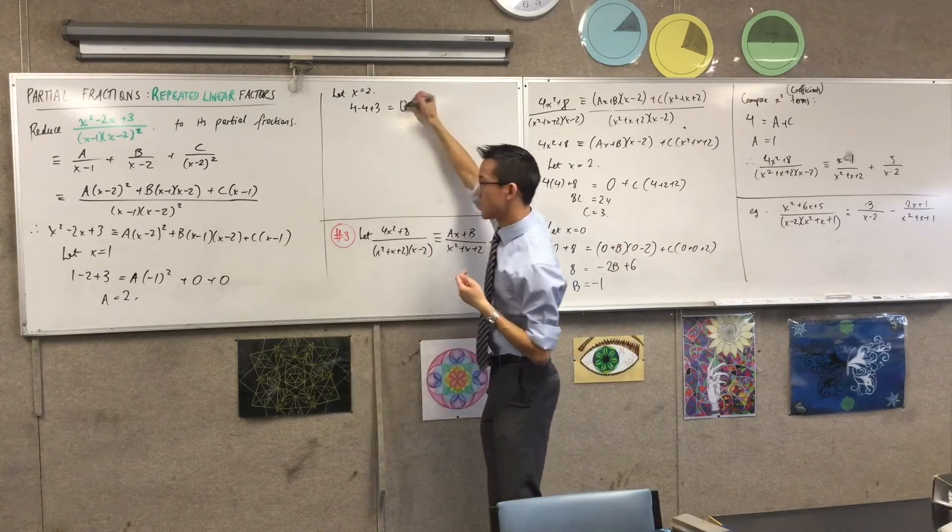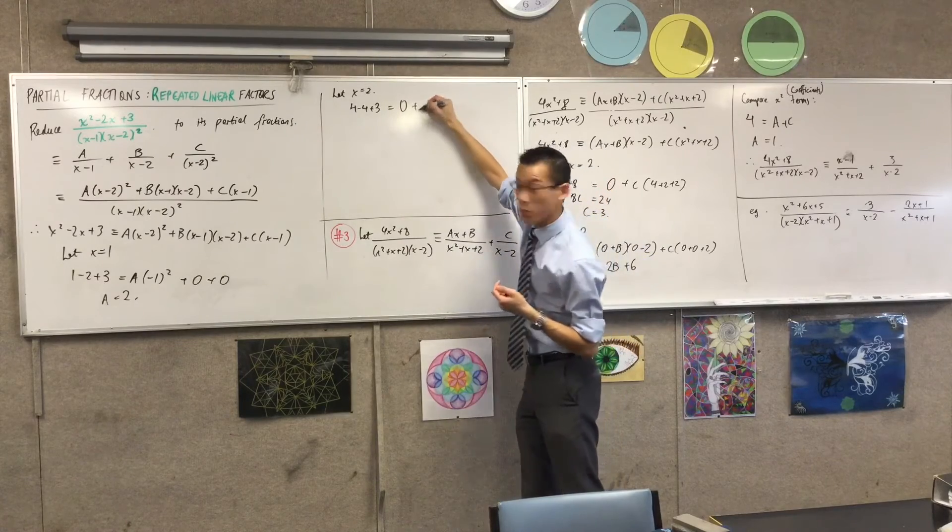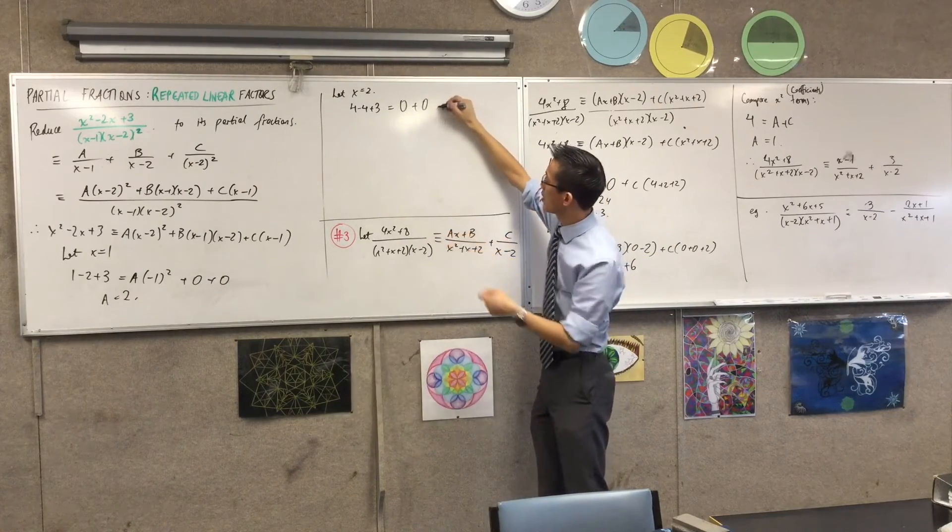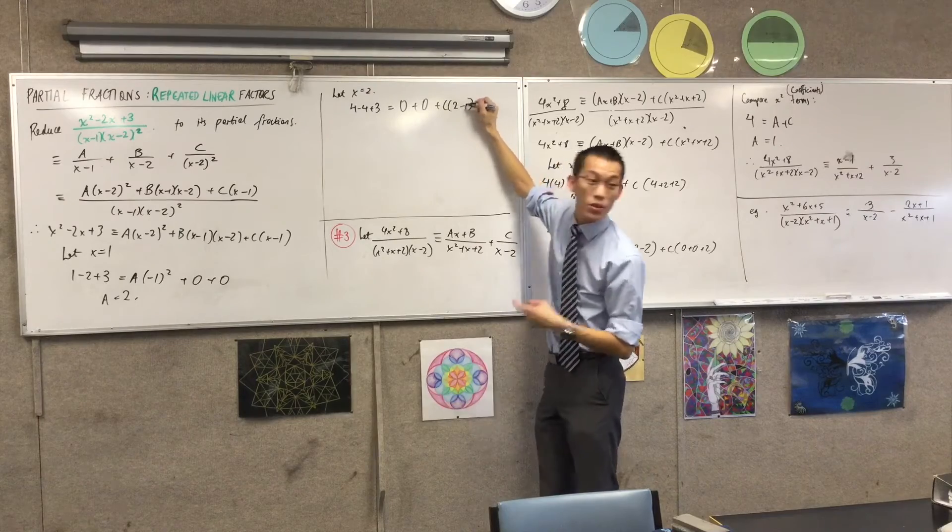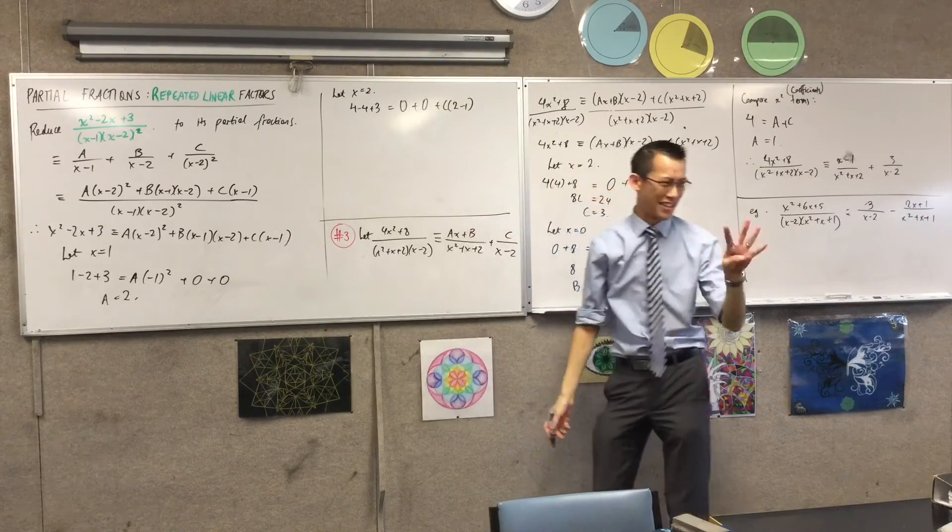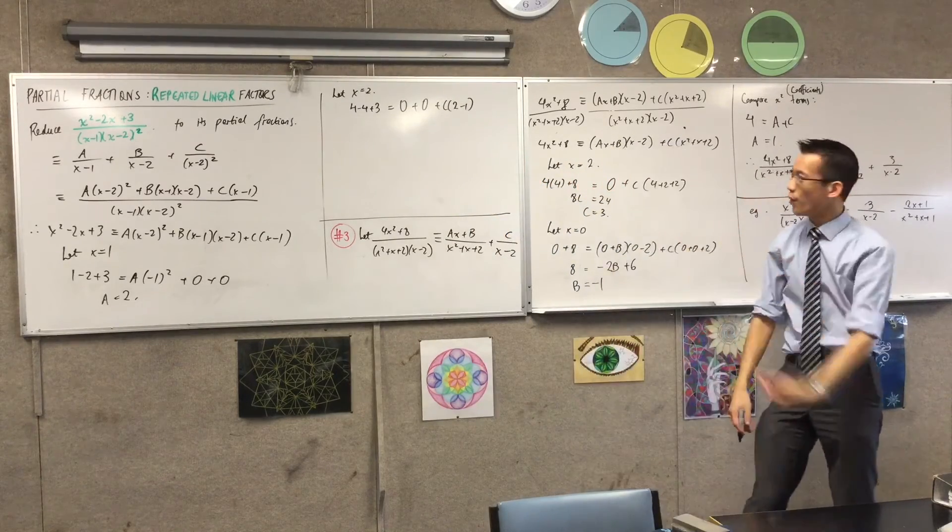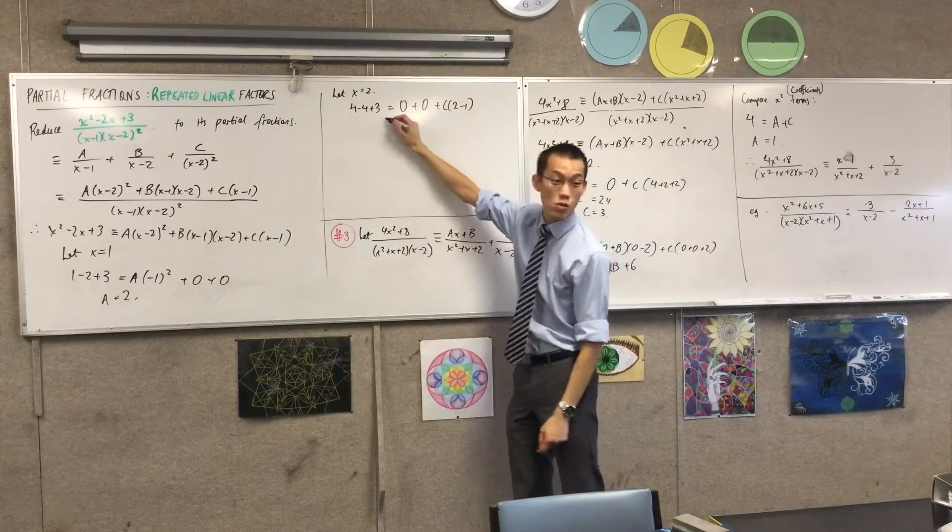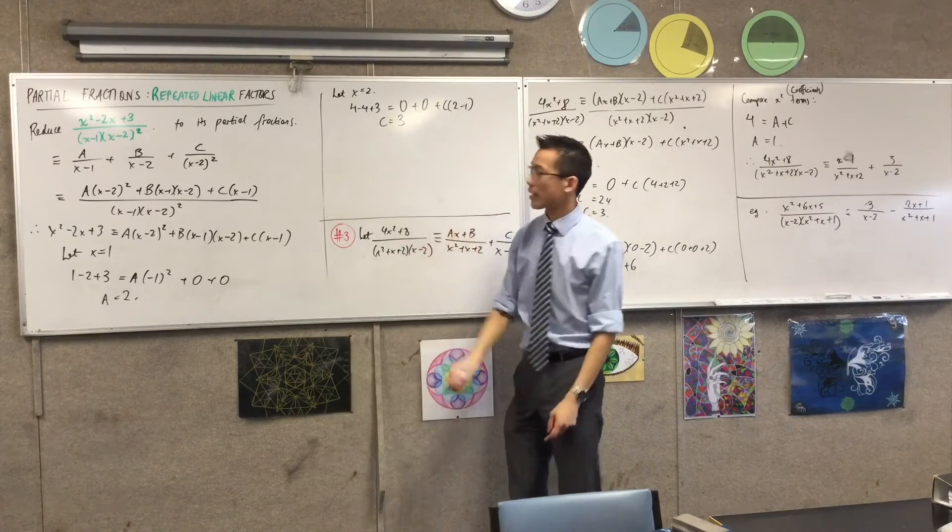Which terms disappear on the right-hand side? The a term disappears. The b term also disappears. And you just get left with c times 2, take away 1, which is very convenient. Won't always come out so nicely, as you've seen before. So, it looks like c is just going to be equal to 3.